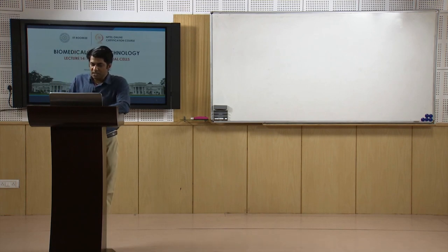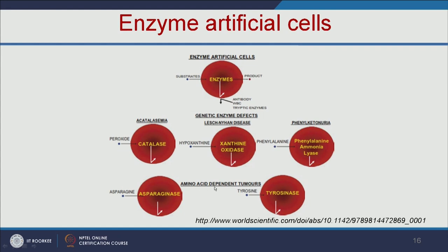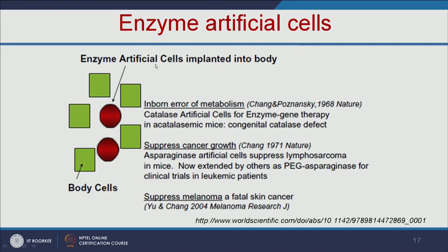We can also use enzyme artificial cells for cancer therapy. Some tumors are amino acid dependent. For example, the enzyme asparaginase can remove asparagine, and tyrosinase enzyme can remove tyrosine, which is required for melanoma growth. Examples include catalase artificial cells used in enzyme gene therapy in mice lacking catalase enzyme, and asparaginase artificial cells that can suppress lymphosarcoma and melanoma in mice models.